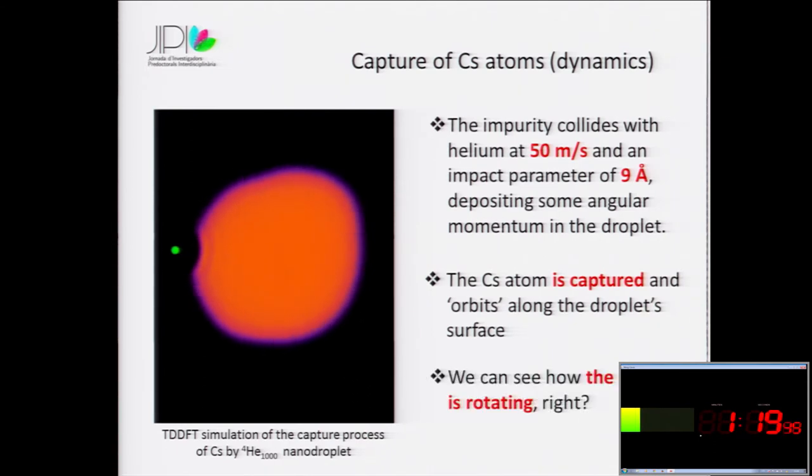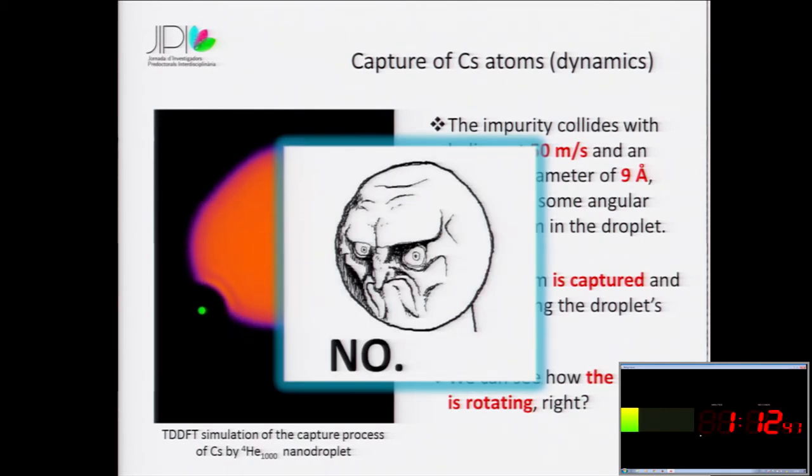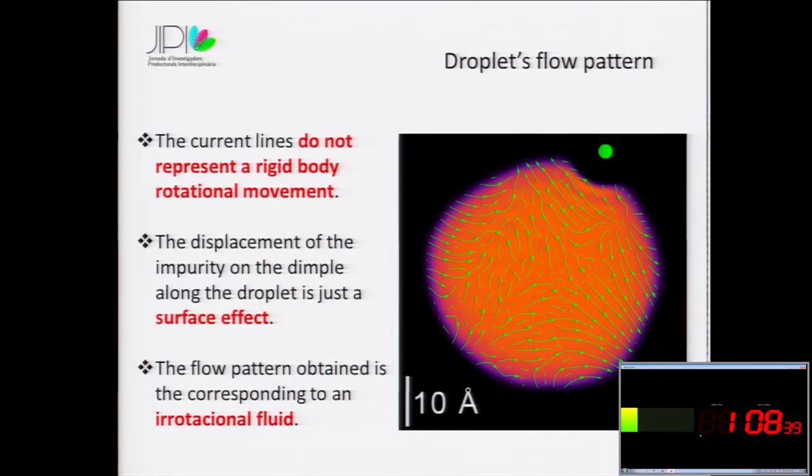And we can also see how the droplet, the whole droplet is rotating, right? No, it isn't. We have calculated the flow pattern of the droplet. And we see how the current lines do not represent a rigid body rotation. And the displacement of the impurity is due to a surface effect instead of a rotation.